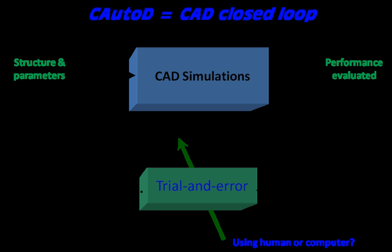Design automation usually refers to electronic design automation, or design automation which is a product configurator. Extending computer-aided design (CAD), automated design and computer-automated design are more concerned with a broader range of applications, such as automotive engineering, civil engineering, composite material design, control engineering, dynamic system identification, and financial systems.